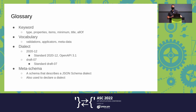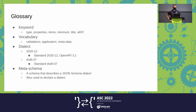What we'll do today is create a JSON Schema dialect that includes some new keywords that we're going to define. A meta schema is just a schema that describes the dialect we're going to be working with. It's also where we're going to declare our vocabularies.